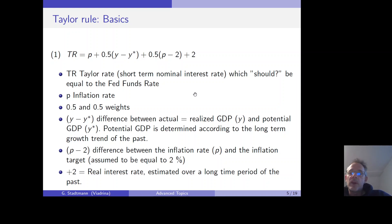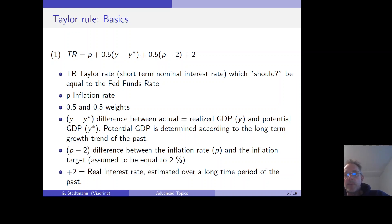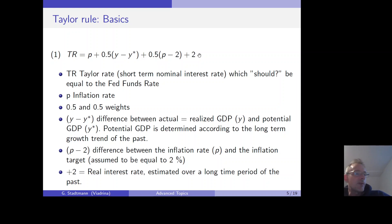On the left-hand side we have the Taylor rate — a short-term nominal interest rate which should be equal to the federal funds rate. P symbolizes the inflation rate. The weights 0.5 and 0.5 apply to the output gap and inflation gap respectively. Y minus Y-star is the difference between actual (realized) GDP and potential GDP, where potential GDP is determined according to the long-term growth trend of the past. P minus 2 is the difference between the realized inflation rate P and the inflation target of 2% — this is the inflation gap. The final element, plus 2, is the real interest rate estimated over a long-term period in the past.